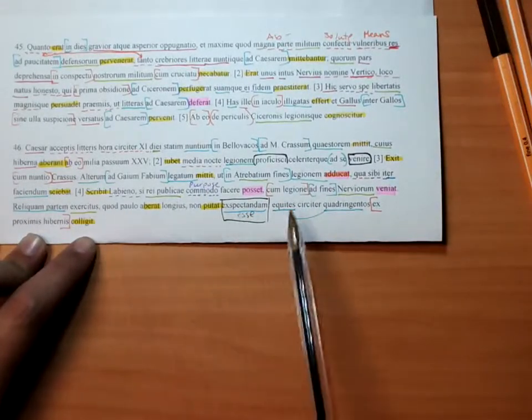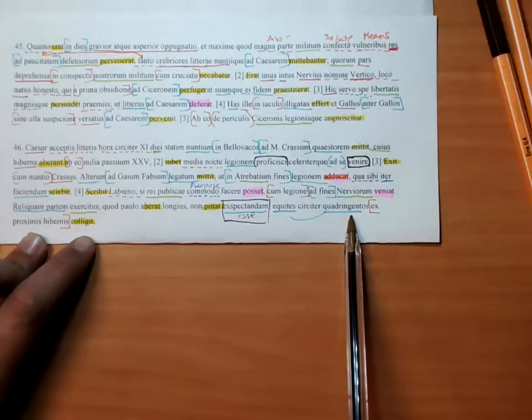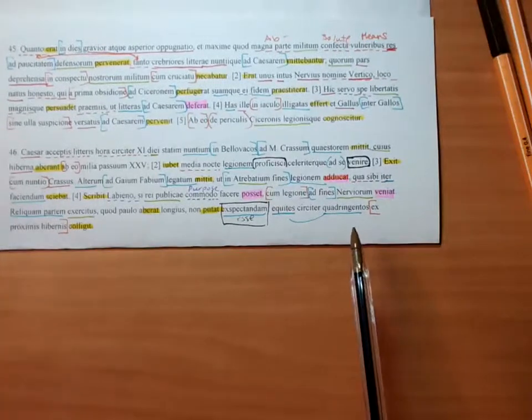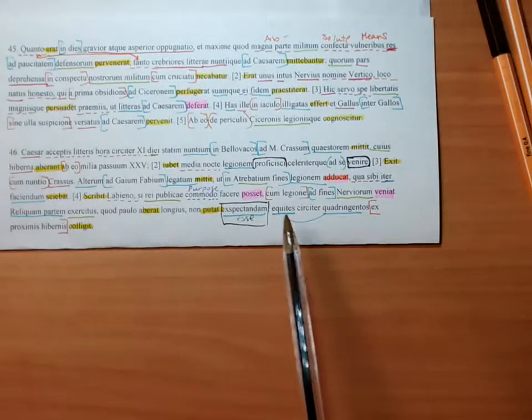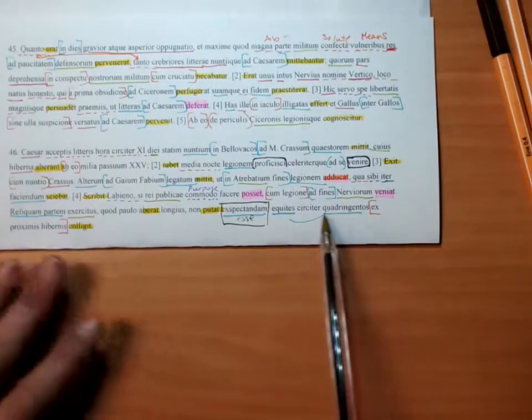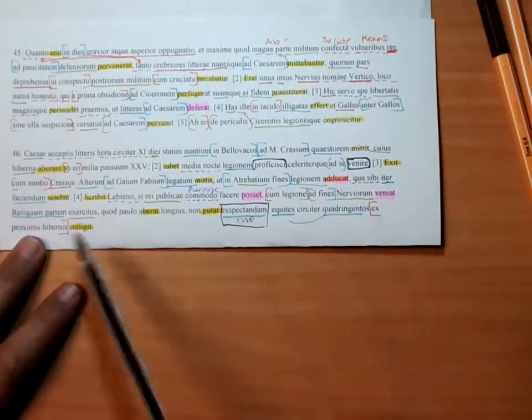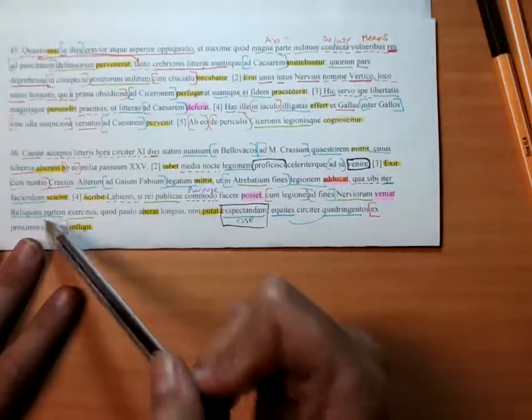He collects about 400 cavalry from the nearby camps or the nearest camps.